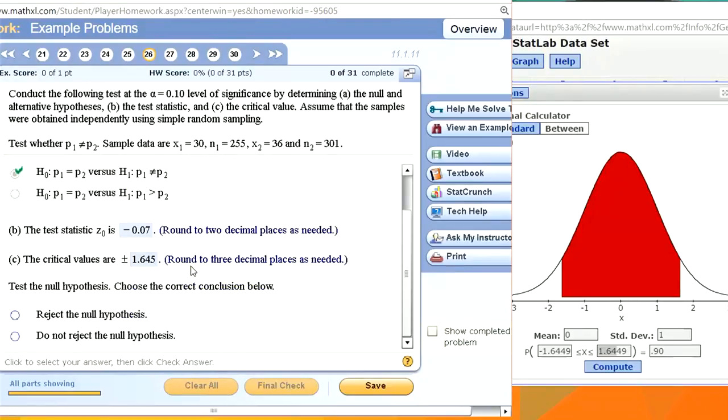Well the test statistic is between the cutoffs, so we do not reject the null. That's the conclusion we make using the classical approach.